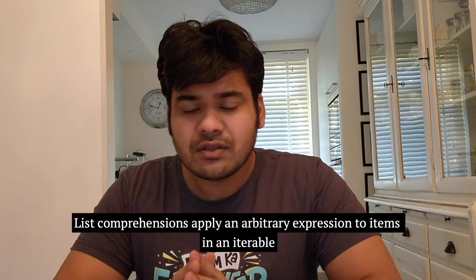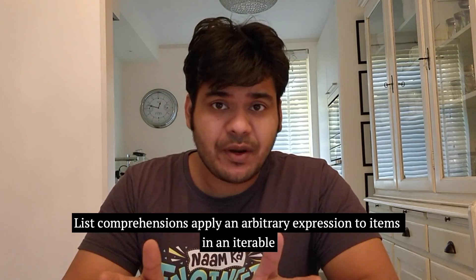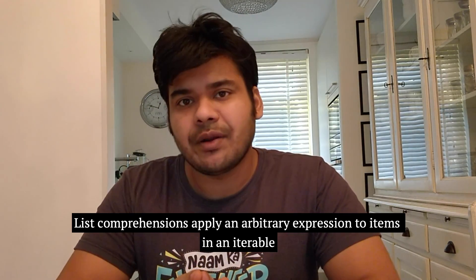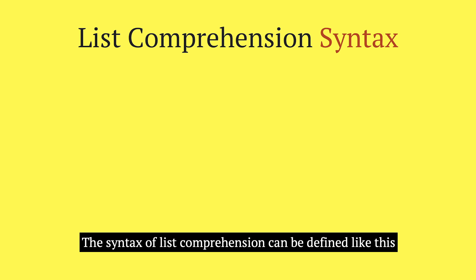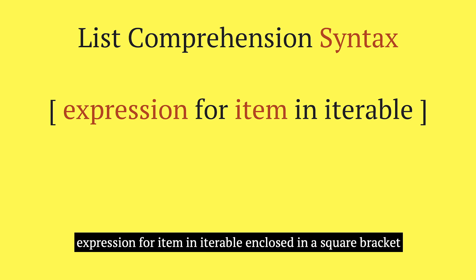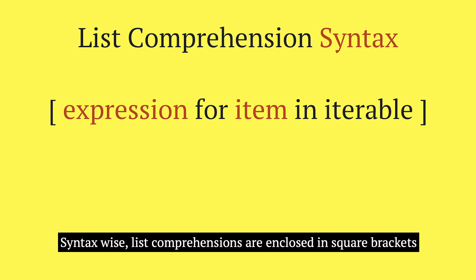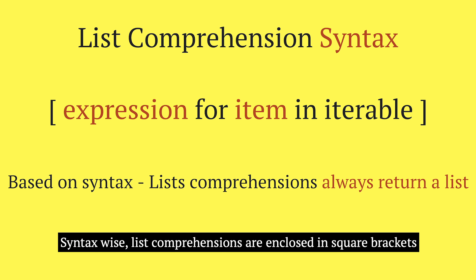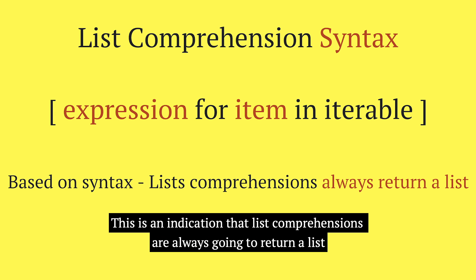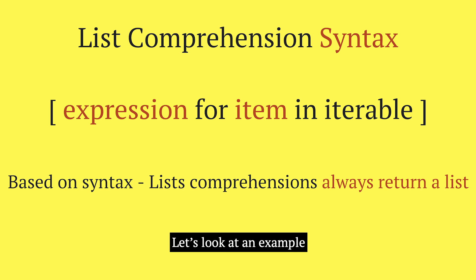List comprehensions apply an arbitrary expression to the items in an iterable. The syntax of list comprehension can be defined like this: expression for item in iterable, enclosed in a square bracket. Syntax-wise, list comprehensions are enclosed in square brackets, which indicates that list comprehensions are always going to return a list. Let's look at an example.